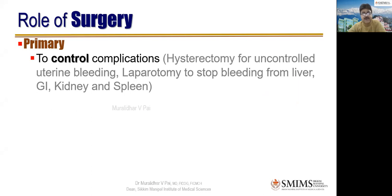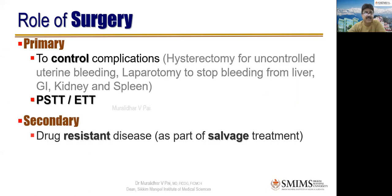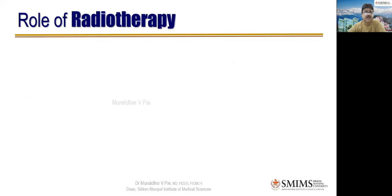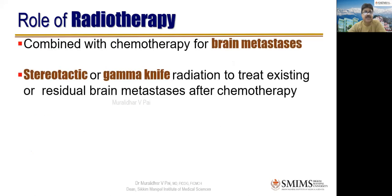The role of surgery in GTN: primary role is to control complications — hysterectomy for uncontrolled uterine bleeding, laparotomy to stop bleeding from liver, GI tract, kidney, or spleen. Hysterectomy is not first-line treatment but is performed for complications such as bleeding, perforation, rupture, or laceration. Surgery is most often performed for PSTT or ETT. Secondary role of surgery is in drug-resistant disease as part of salvage treatment or excision of isolated metastases. Radiotherapy is reserved for brain metastasis.